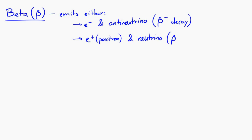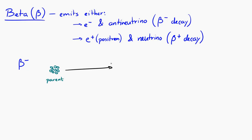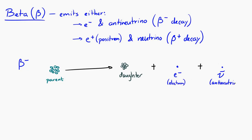I've just introduced some new things you might not have heard of, like antineutrino, positron, and neutrino. We'll see these more in the future. For now, it's not important to know exactly what they mean — just know that they are part of beta radiation. If you have a parent nucleus that decays by beta minus decay, when it decays into the daughter nucleus it emits an electron and an antineutrino, and they go off in separate directions. The antineutrino is represented with the Greek letter nu, which looks like a V with a little tail, with a bar over it because it's an anti-particle.